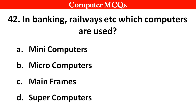Next question: In banking, railways, etc., which computers are used? Options A. Mini computers, B. Micro computers, C. Mainframe computers, D. Super computers. Right answer is option C: Mainframe computers.